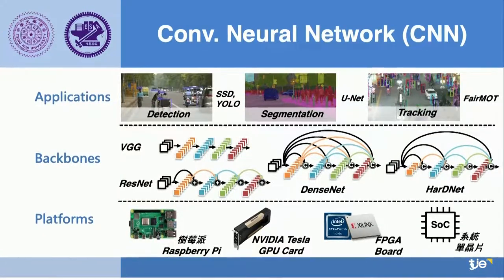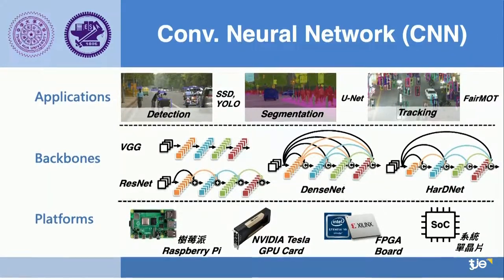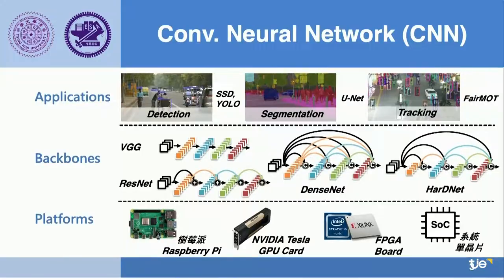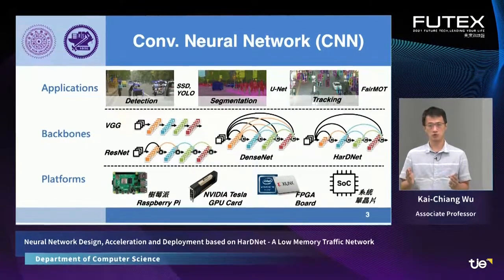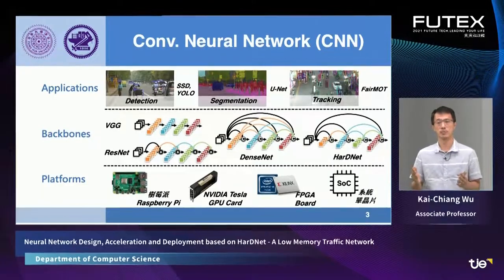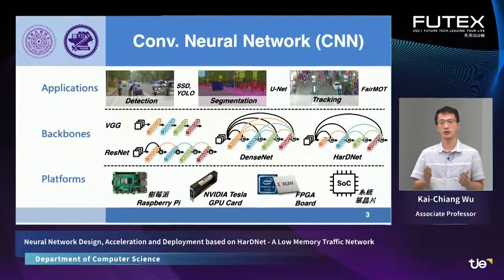I have to introduce a few backbones used by well-known CNNs. One is VGG, and the other is ResNet, also known for its residual connection. We also have DenseNet, known for its dense connections between blocks. The neural network architecture on the right-hand side is the one we proposed, called HardNet. We also introduce several different platforms where we can deploy our CNNs, including Raspberry Pi, SumaiiPi, GPU, FPGA, and ASIC SoCs.